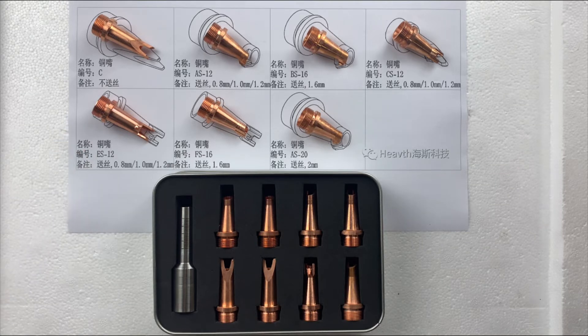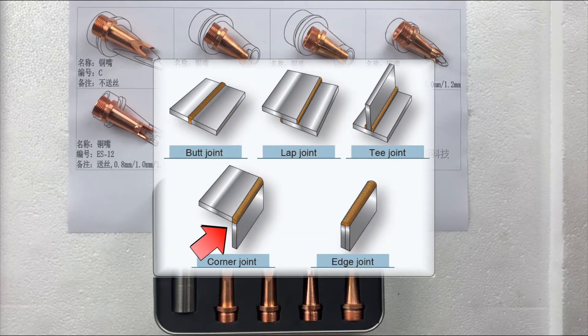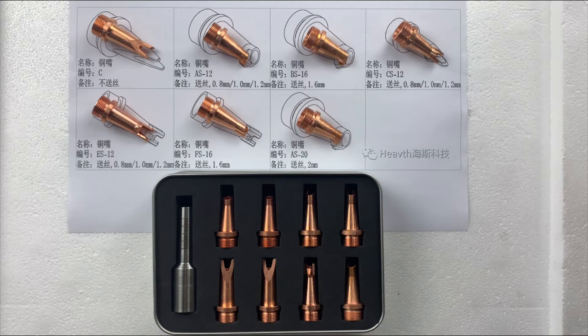Laser ES12 is for butt joint, outer corner joint, 0.8 to 1.2 mm well-fitting welding.